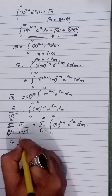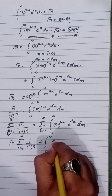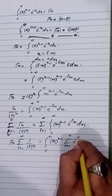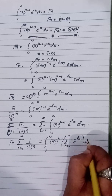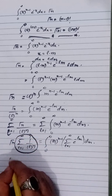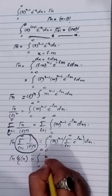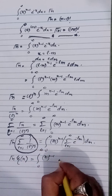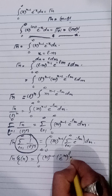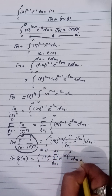The summation of 1/l^n from l=1 to ∞ is equal to ζ(n), the Riemann zeta function. Therefore, Γ(n)·ζ(n) = ∫₀^∞ m^(n-1) · [summation of e^(-lm) from l=1 to ∞] dm.